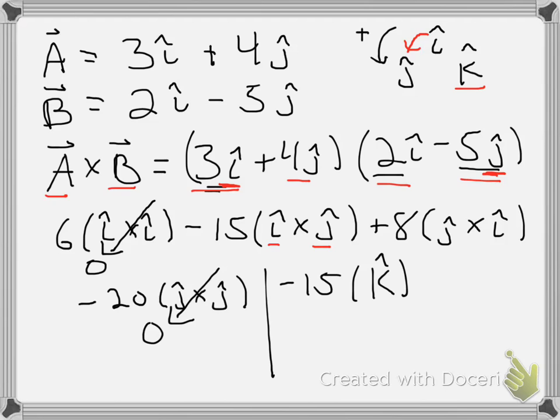And my next term is going to be plus 8. And j crossed into i. Let me do this in yet a different color. j crossed into i. I'm moving this way. So, I'm going to get a k out of that operation also. But now, I'm moving clockwise around that circle. And so, my sign is going to be negative. So, I'm going to get an 8 times a minus k. A minus k hat.